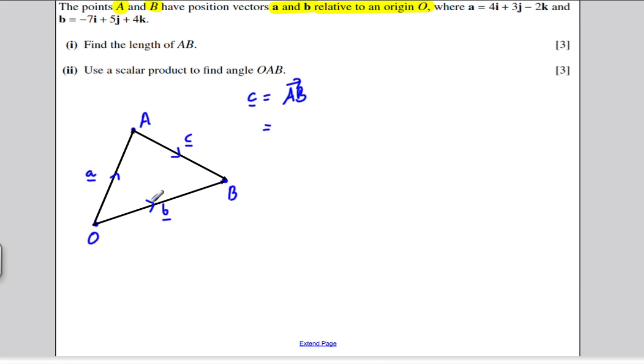And in order to do that, how do I get a vector C? Well, going from A to B is the same thing as going minus A plus B, or B minus A. You will always find this with, if you're going from A to B, that's the same as taking the position vector B, how to get from O to B, and subtracting the vector O to A. So this vector here is C, and I'm going to work that out because I know B is minus 7i plus 5j plus 4k, and I know that A is 4i plus 3j minus 2k.